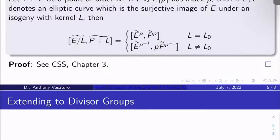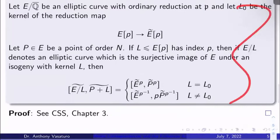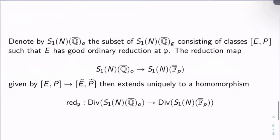So the proof of this is in CSS chapter 3. I'm going to use this to prove something that's going to be a bridge to the Eichler-Shimura theorem, which will probably be covered next video. So before I give you that bridge, let's extend some of this theory to divisor groups because we're going to need to do that to make sense of things.